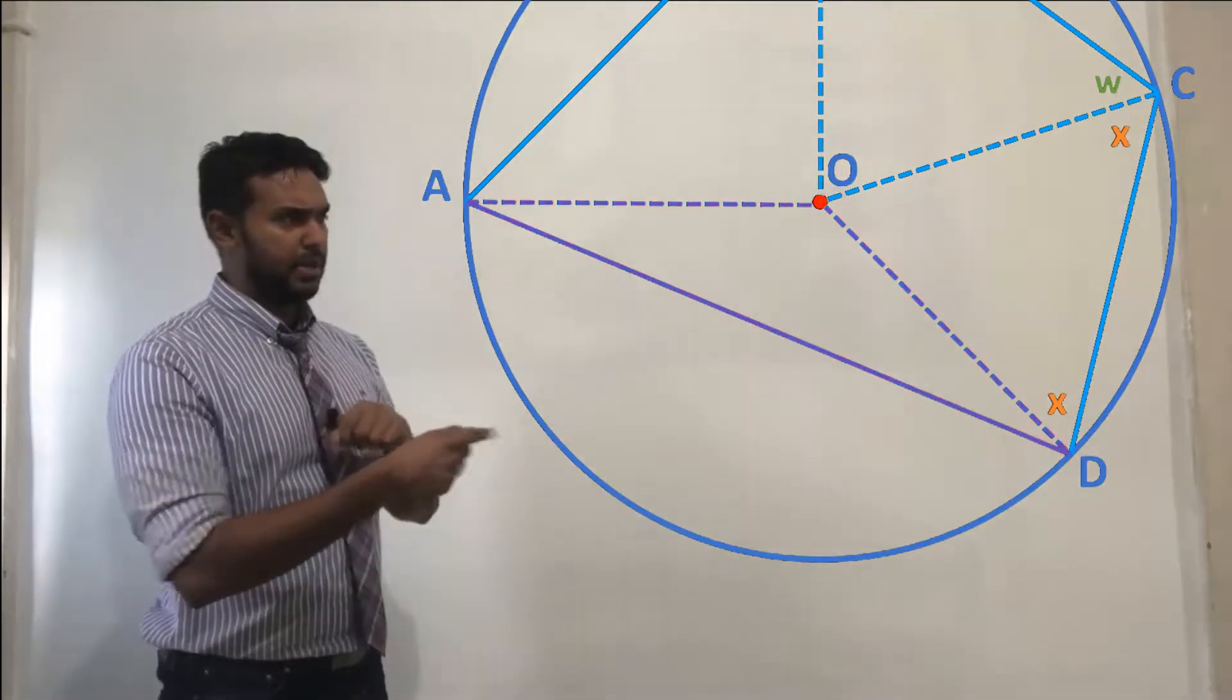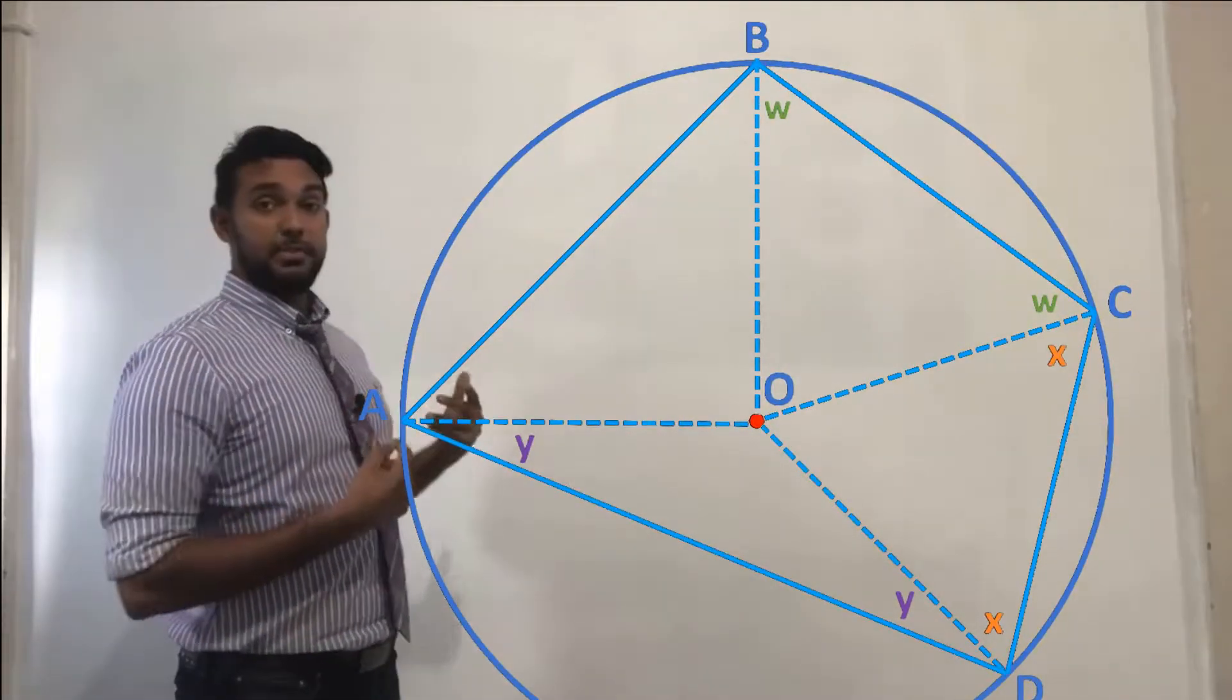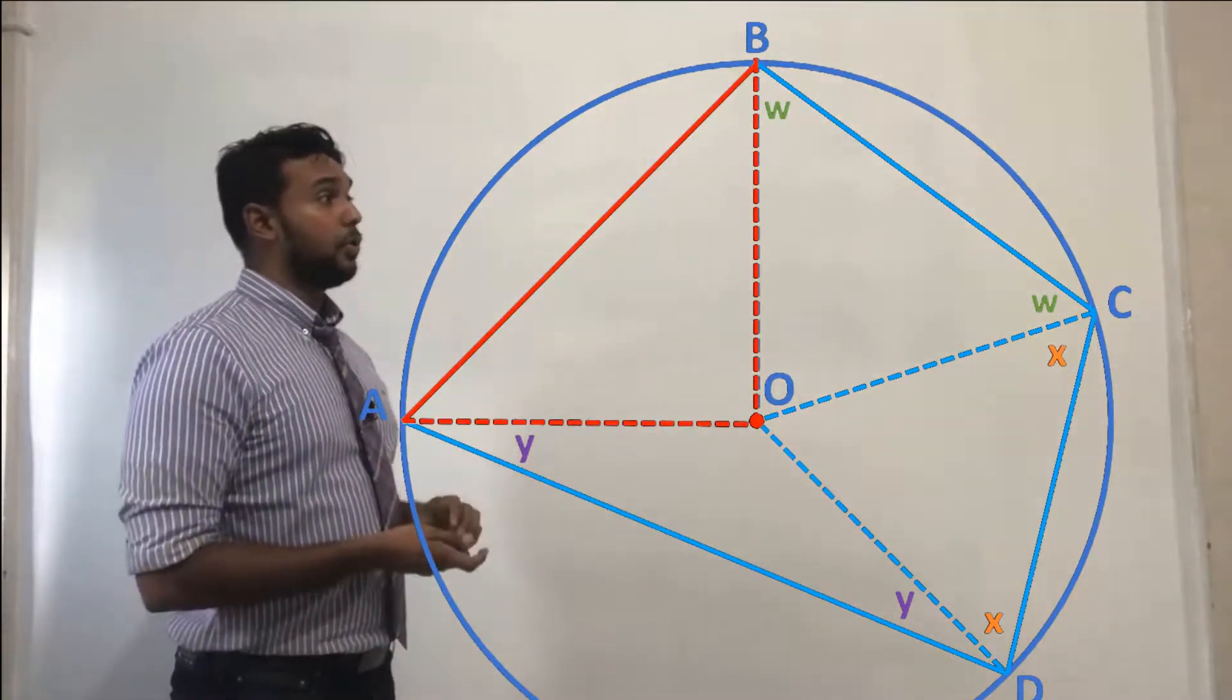The one on the bottom here now, we're going to put that one in purple. We'll call those angles Y. And the one on the left side closest to me, we're going to put that one in red. And we're going to call those angles Z.